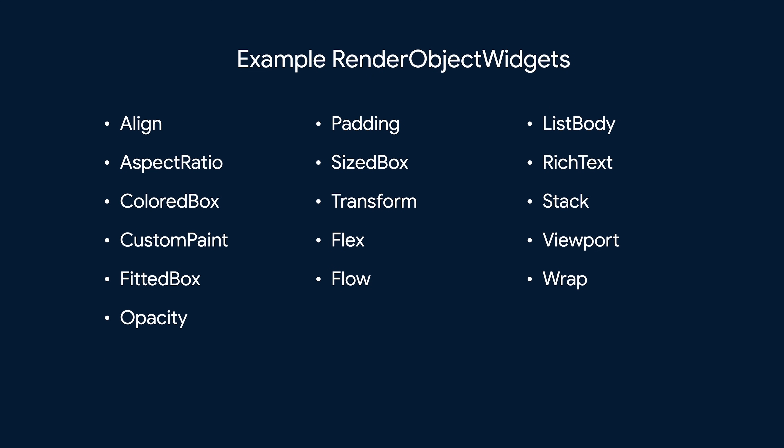Compare those lists with these example render object widgets from the Flutter framework. Notice that most are low-level visual concepts around alignment, sizing, color, spacing, and text. These are concepts that you can actually use to lay out and draw UIs, and they're the building blocks all of those stateless and stateful widgets bring together to make our apps light up.